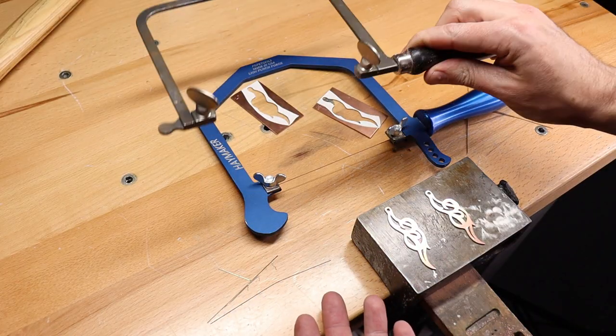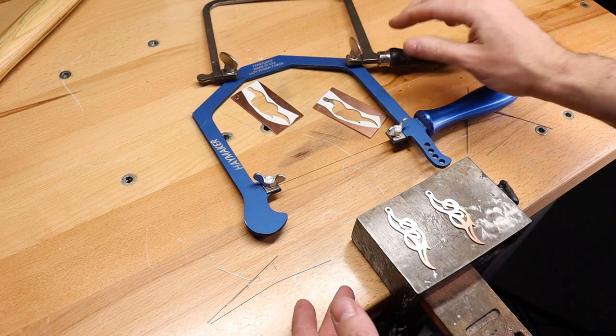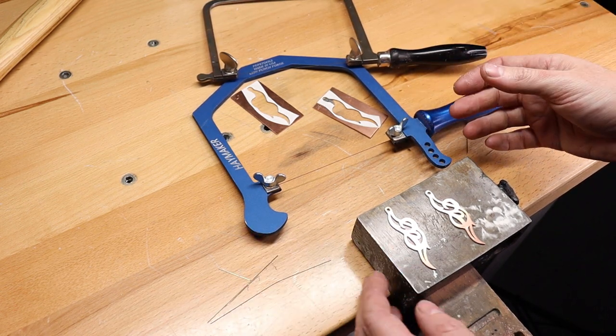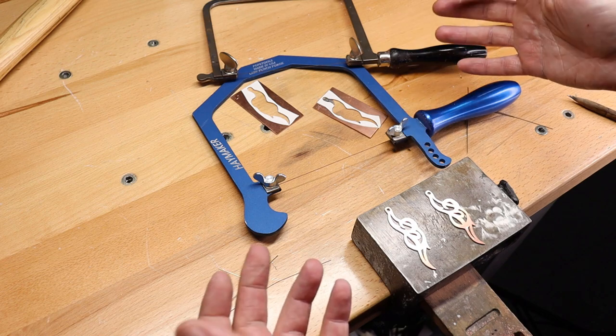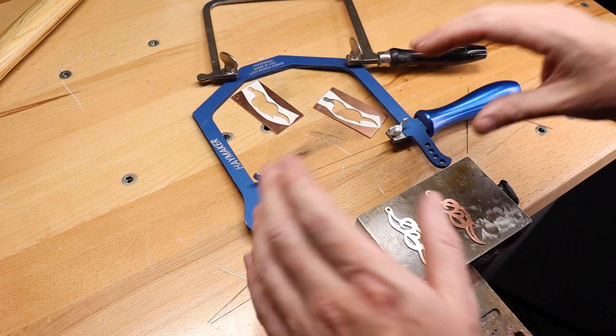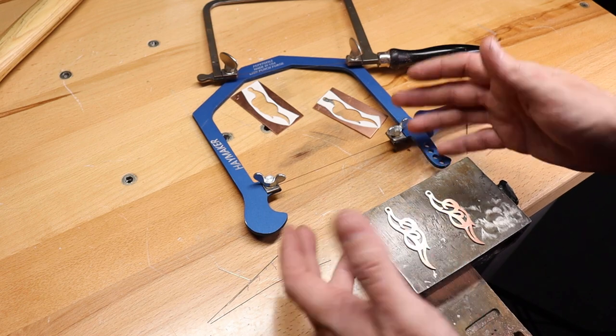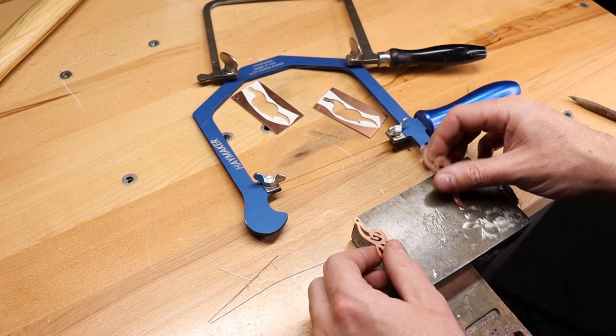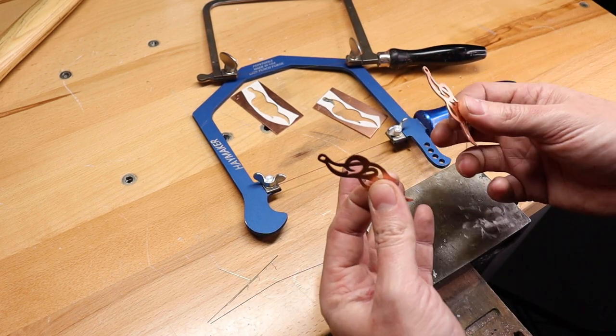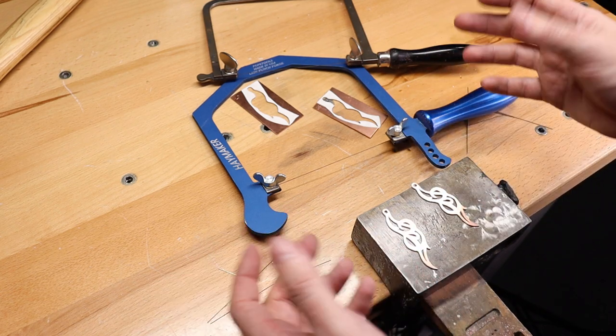So you might be thinking, well, I broke more blades on this one. Therefore, this one is better automatically. Well, not really. Just because, like I said, I'm trying to record this so you can see. And I have to move my hands a little bit differently to make sure I'm not blocking the camera. And I'm able to do things like this normally without breaking any blades on just about any saw I use. So that's really not it.